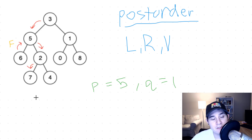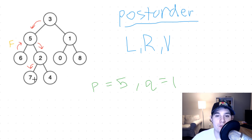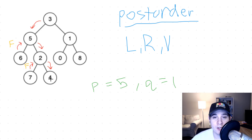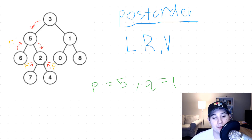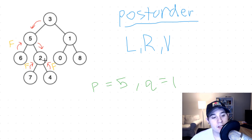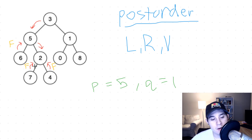From two, we go left to seven. Seven's left and right are null, and since seven is not equal to P or Q, we return false from node seven. Then we go right at node two to node four. Four has both left and right child as null and is not equal to P or Q, so we return false from four. Now at node two, we've already visited seven and four. Node two is also not equal to P or Q, and both child results were false, so we return false from node two as well.